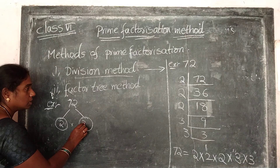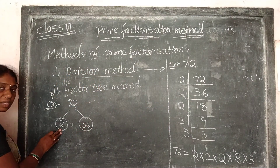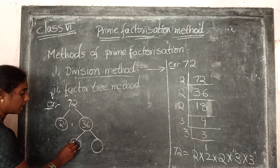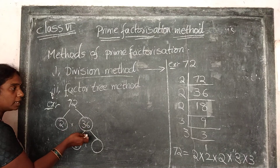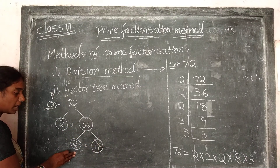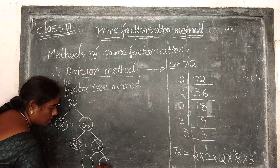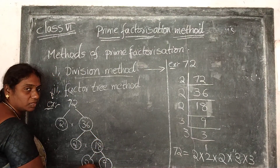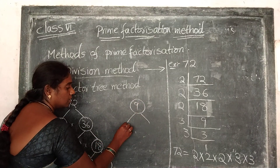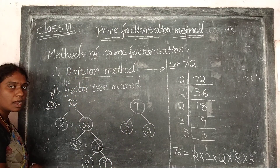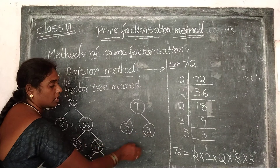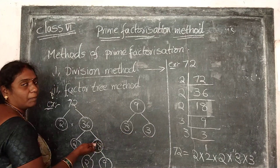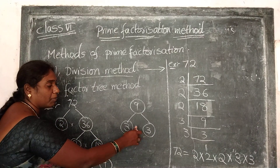Factor tree method is like a tree structure. First of all we apply the divisibility test by 2. 72 divided by 2 gives 36. Since 2 is a prime number, we leave that branch. For 36: again take 2 — 36 divided by 2 gives 18. 2 is prime, leave it. For 18: 2 times 9. 2 is prime, leave it. For 9: 3 times 3. Here 3 is a prime number, and here 3 is also a prime number. So the process ends here because we get all prime numbers — 2, 2, 2, 3, and 3.